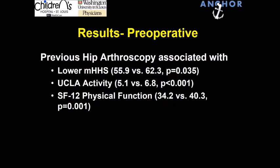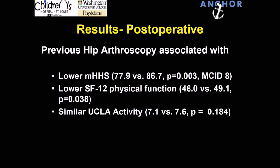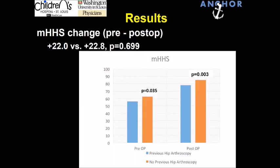Looking at results, patients with prior arthroscopy had a lower modified Harris Hip Score at presentation — indicating more pain and more dysfunction. They also had lower UCLA activity scores and lower physical function scores. At follow-up, previous hip arthroscopy was associated with a lower Harris Hip Score of about nine points, which is clinically important, as well as lower SF-12 and lower UCLA activity scores. The delta in the two groups is about the same at 22 points, but the previous scope group presents with lower scores and ends with lower scores, with a similar delta.